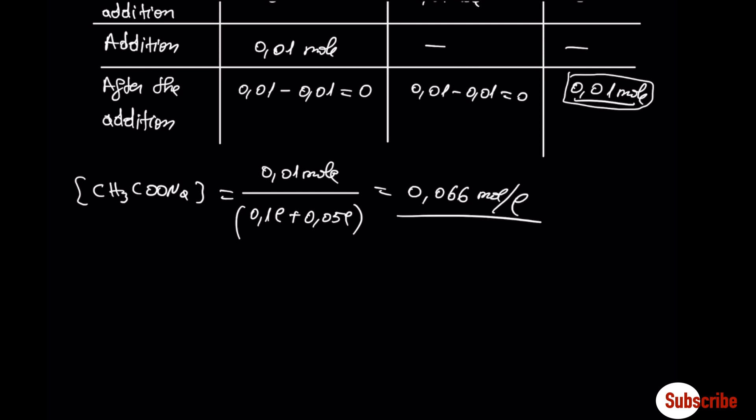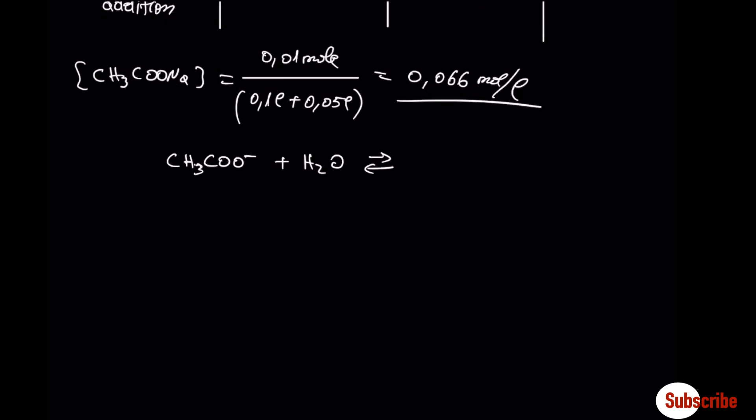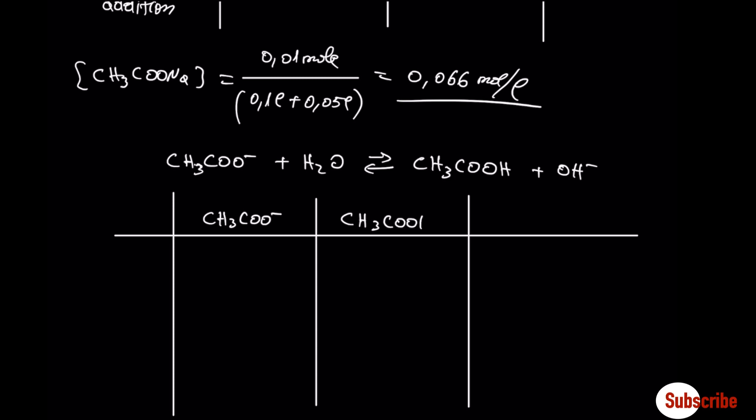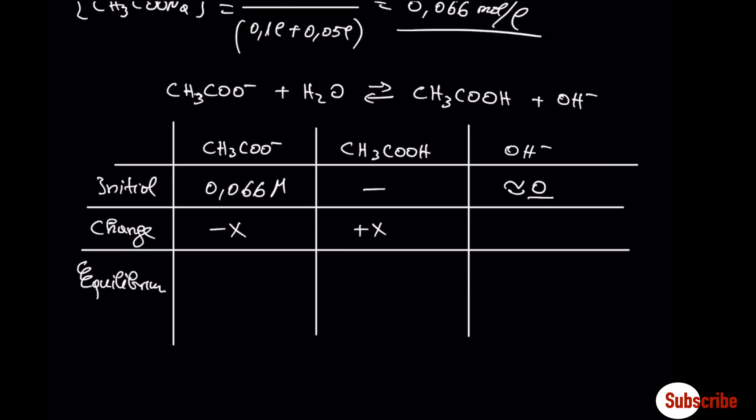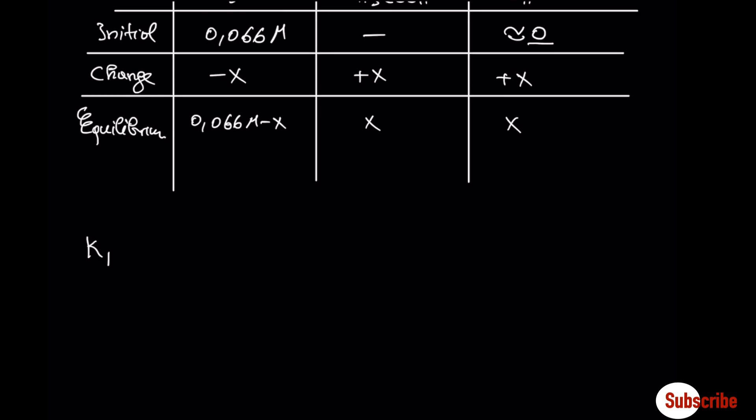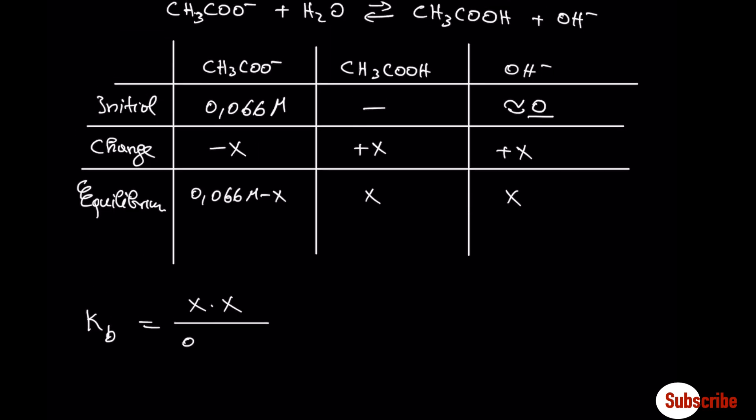Now, let's deal with a simple equilibrium problem. Let's draw the equilibrium table. This here is approximately zero because it comes from the dissociation of water, 10 to minus 7. Equilibrium is going to shift to the right.